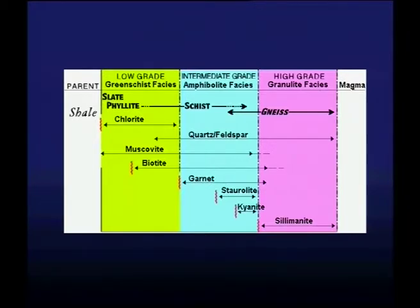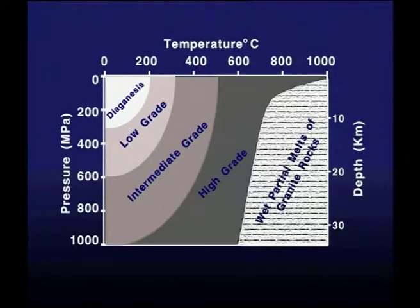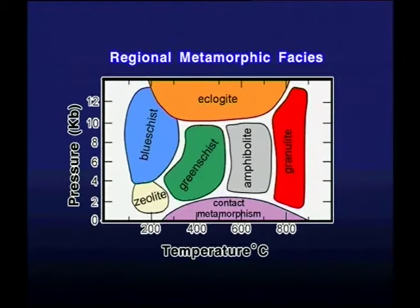On the basis of that map, we can see that chlorite indicates the low-grade zone while sillimanite represents the higher-grade zone. The sequence from chlorite to sillimanite also indicates progression from greenschist to amphibolite to granulite facies.